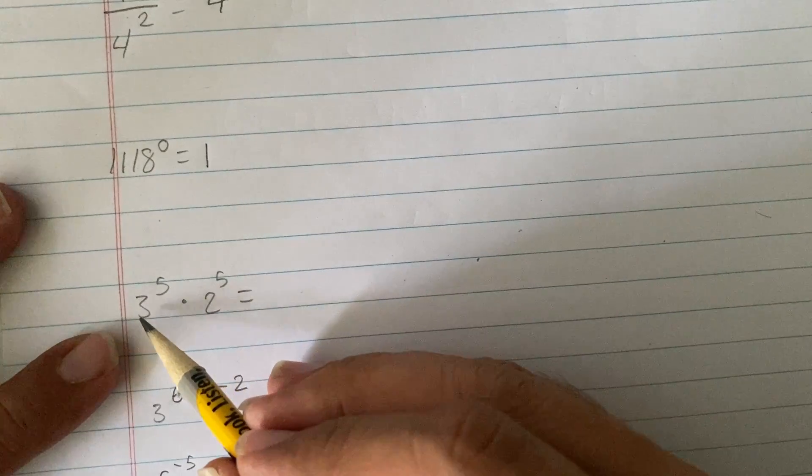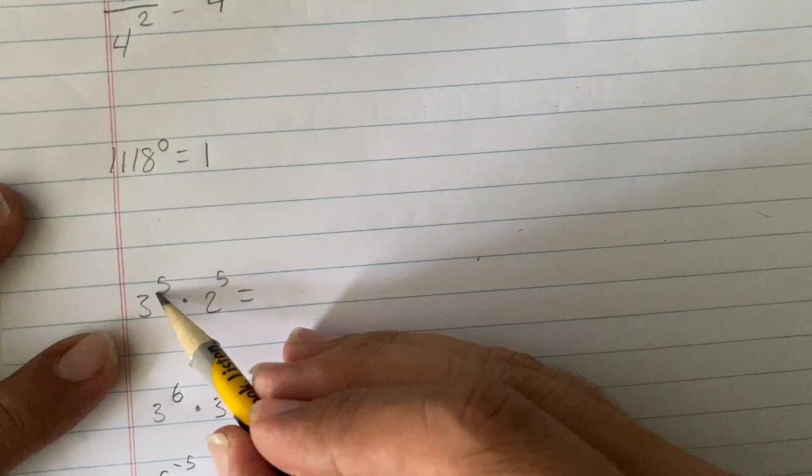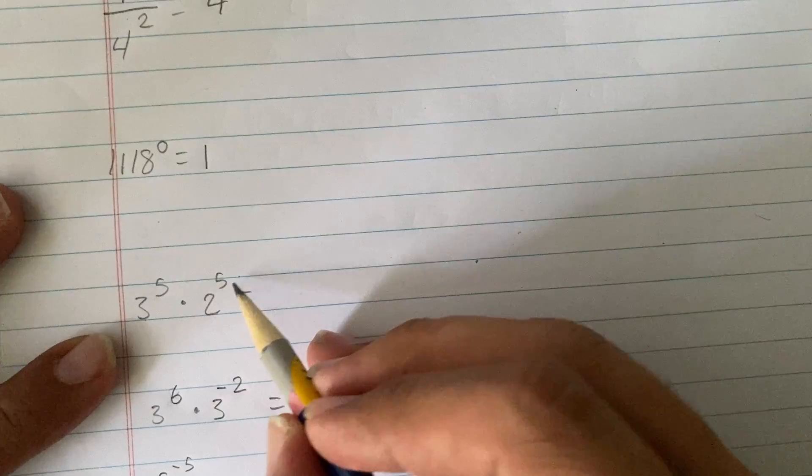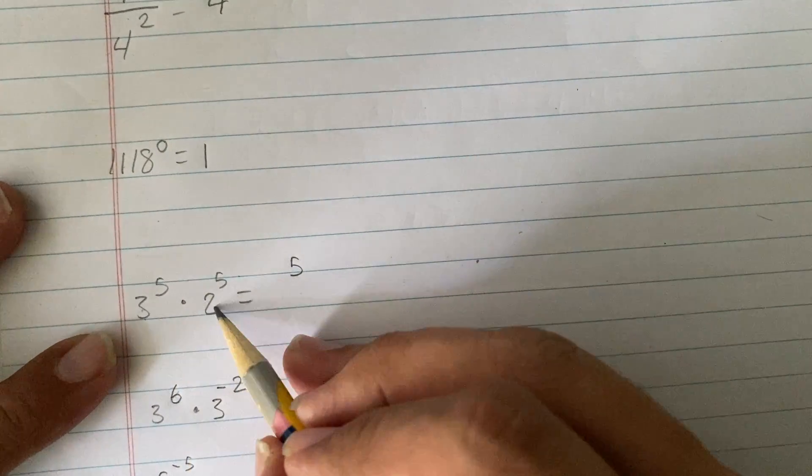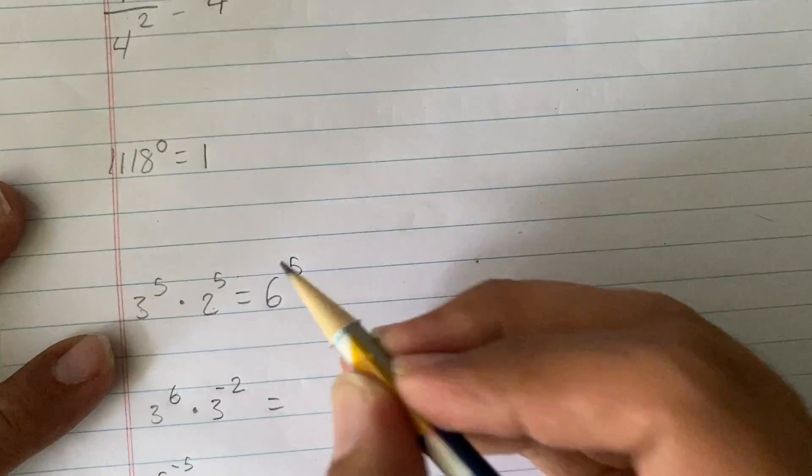Then, here, now, the bases are different, but the exponents are the same. So, the exponents will continue being 5, and these two will multiply, becoming 6.